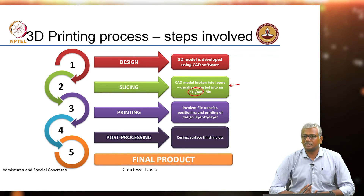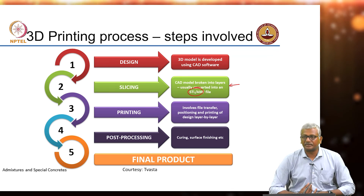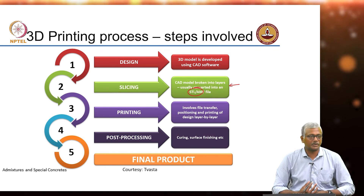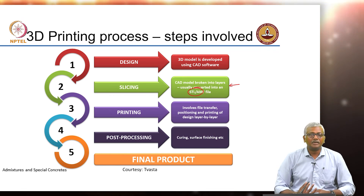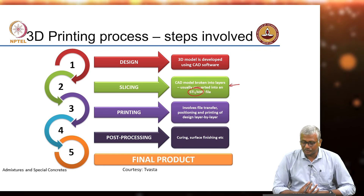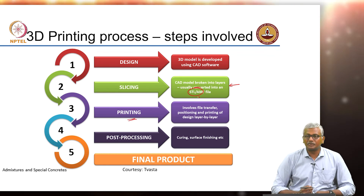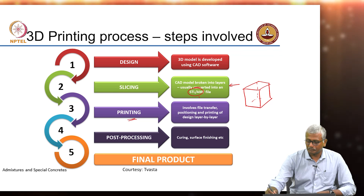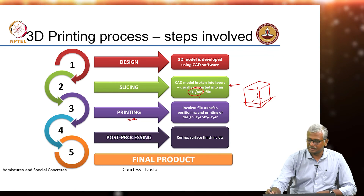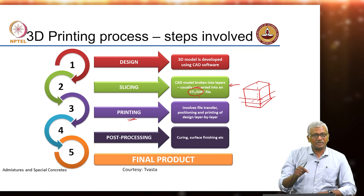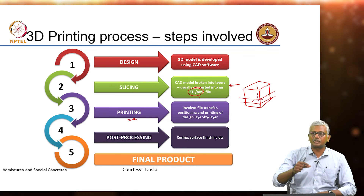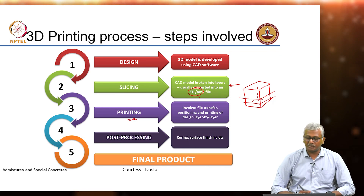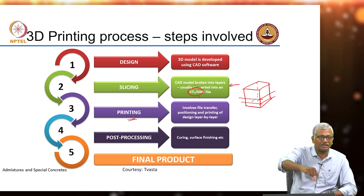The next step is telling the printer to print in those layers. For example, if you want to print a box, you break it up into slices and ask the printer to execute it — it will just print rectangles or squares one on top of the other until you have the complete box. This involves file transfer, positioning, and printing of the design layer by layer. Essentially your printer goes wherever the material is required, extrudes the material, and places it there.